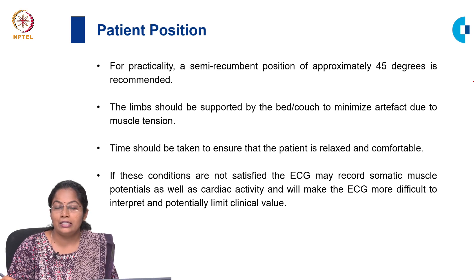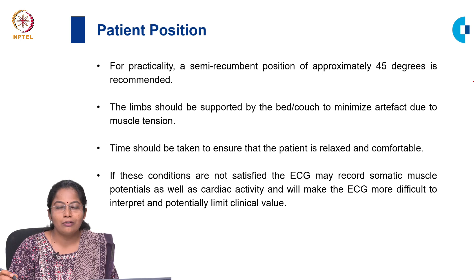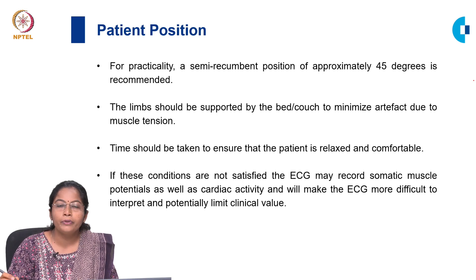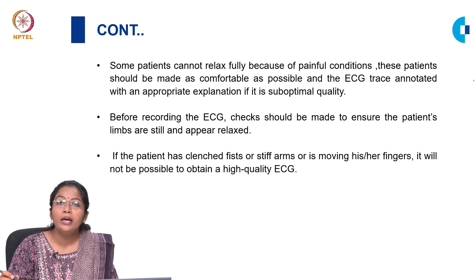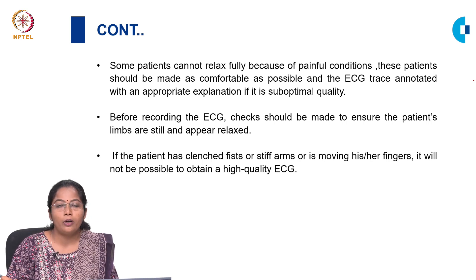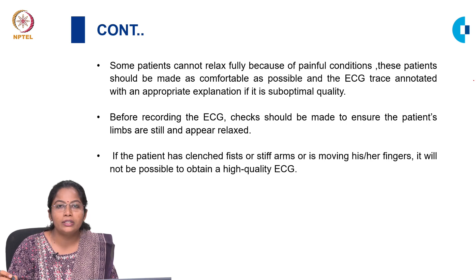The third important step is positioning the patient. The patient should ideally be positioned in a semi-recumbent position with 45 degree inclination. If not possible, a supine position is also enough. You should make sure that the limbs are well supported on the couch and the patient is completely relaxed and comfortable. Also make sure that the limbs do not touch the railings of the cot, because limbs moving around or touching the railings can alter your ECG recording. In patients where the ECG recording is altered or the patient is not able to position properly because of pain, you should annotate in the ECG the reason for suboptimal ECG quality.